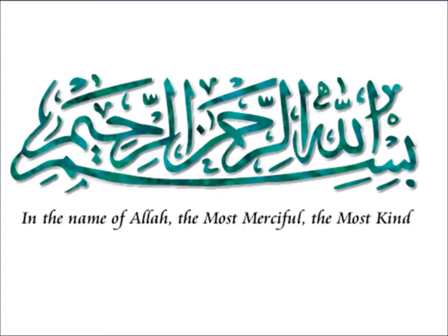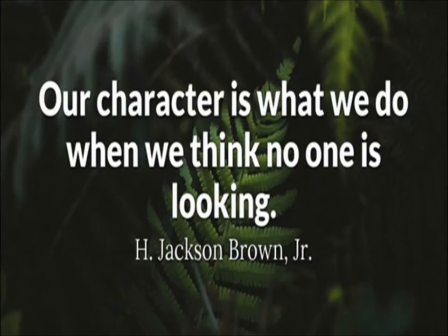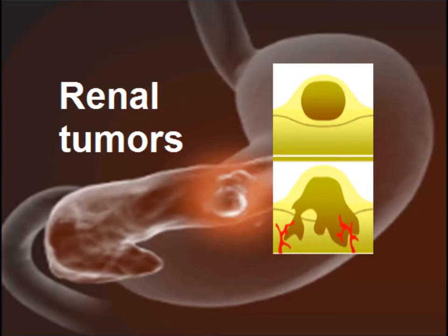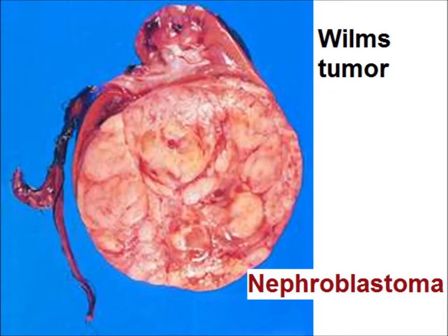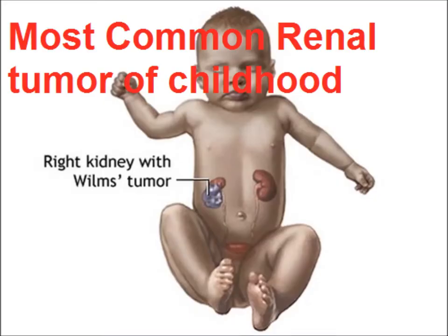In the name of Allah, the most merciful, the most kind. Our character is what we do when we think no one is looking. Today we will discuss renal tumors, and among renal tumors the childhood tumor called nephroblastoma or Wilms tumor. It is usually a large tumor, may be unilateral or involving both kidneys, and is the most common renal tumor of childhood.